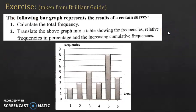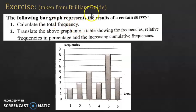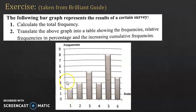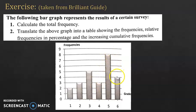This exercise is taken from Brilliant Guide. The following bar graph represents the results of a certain survey. Always when you have a graph, take your time to read it carefully. The first question: calculate the total frequency. Since the total frequency is not given, it would be the sum of all the frequencies. You can get the frequency of each value from the diagram — the frequency of 1 is 2, frequency of 2 is 3, and so on. So the total frequency would be 2 + 3 + 5 + 3 + 8 + 4, which gives you 25.